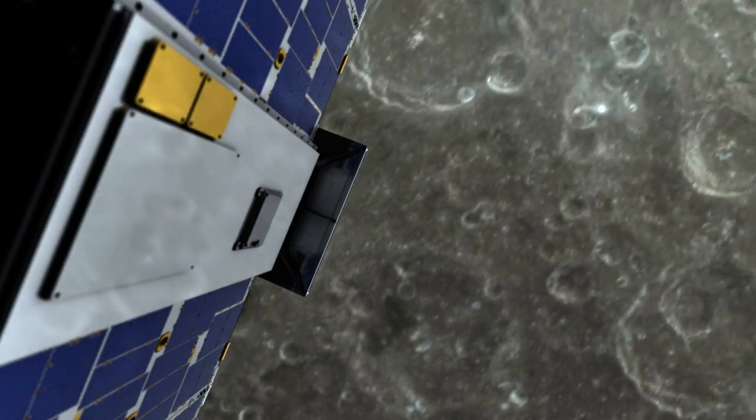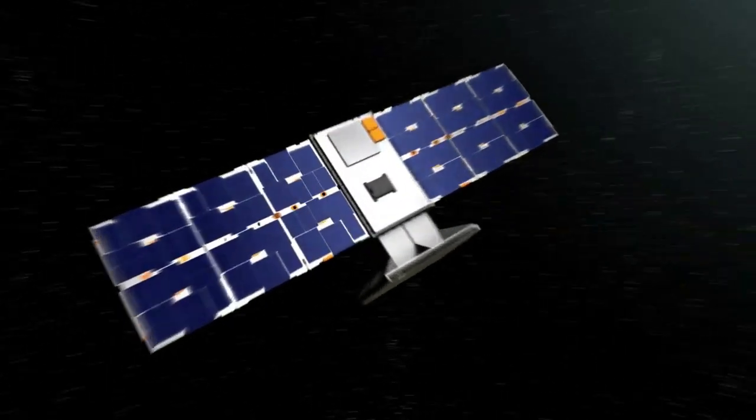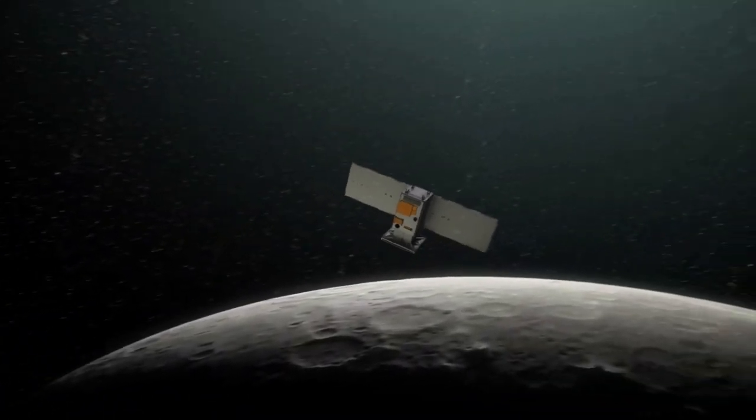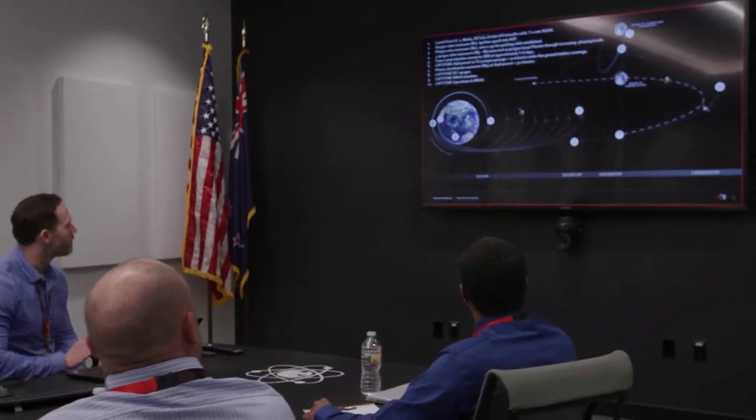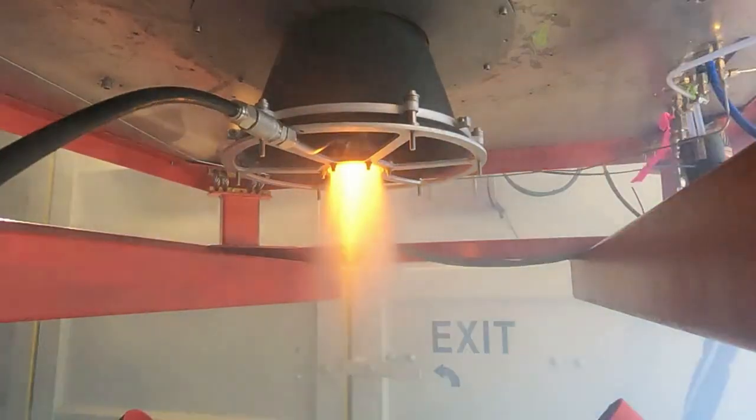At the time, while work was ongoing to diagnose the cause of the issue, the team was preparing Capstone to attempt a detumble operation to regain attitude control of the spacecraft. This detumble operation was successfully demonstrated after separation from the launch upper stage in July.